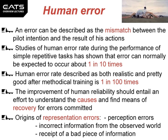Human error. An error can be described as the mismatch between the pilot's intention and the result of his actions. Studies of human error rate during the performance of simple repetitive tasks has shown that the error can normally be expected to occur 1 in 10 times. Human error rate described as both realistic and pretty good after methodical training is 1 in 100 times. The improvement of human reliability should entail an effort to understand the causes and find means of recovery for errors committed.